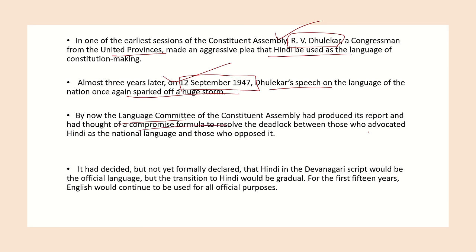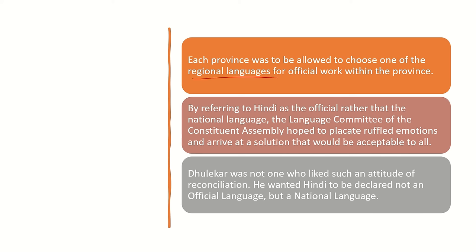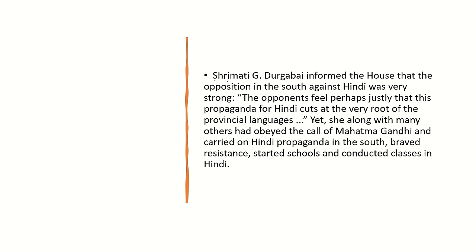The Language Committee offered a compromise formula to end the confusion. It was decided that Hindi written in Devanagari script would be made the official language, but the transition from English to Hindi would be gradual — English would continue to be used for official purposes for 15 years, after which Hindi would be adopted. Each province was given the right to retain its own regional language, like Punjabi in Punjab or Tamil in Tamil Nadu, for official work, but Hindi would be the overarching official language. Dholekar wanted Hindi declared the national language, not just official language. Shrimati Durgabai said there was great opposition to Hindi in the south, and even those who went south to spread Hindi following Mahatma Gandhi's wish had faced resistance and revolt from the people.